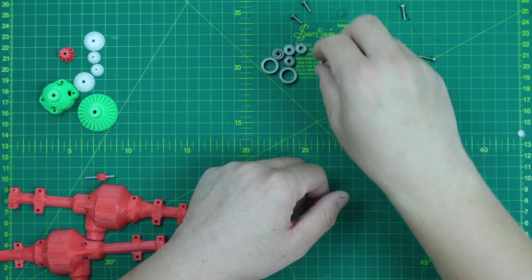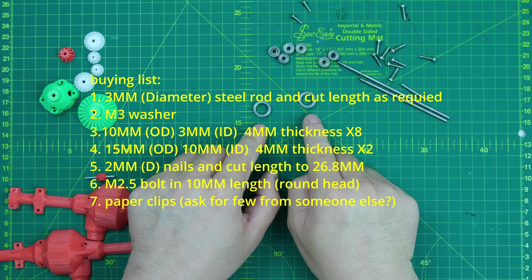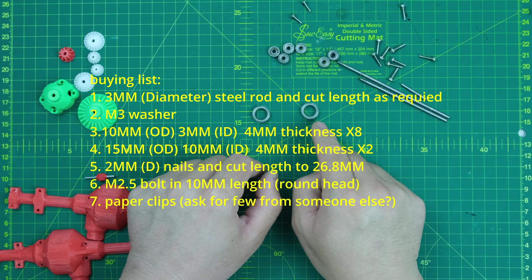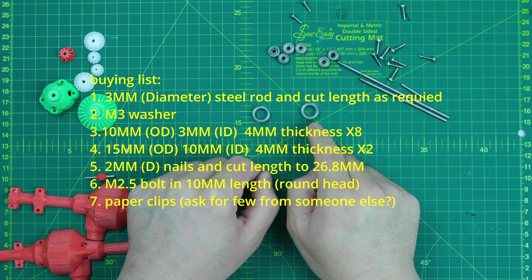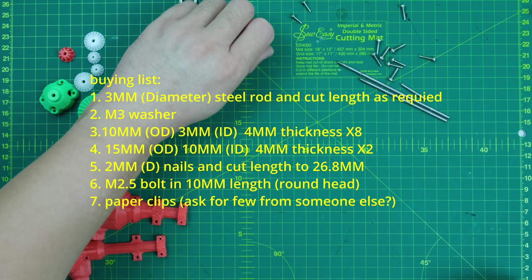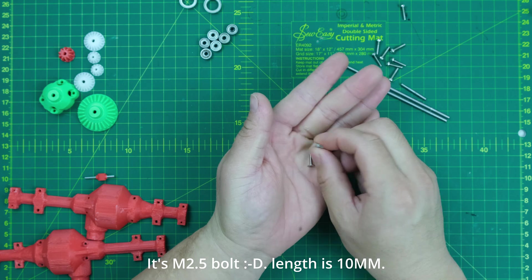You need to buy ball bearings. There are two types of them used in my project. Two big ones, which are 15mm outer diameter and 10mm inner diameter. Another one is smaller, which is 10mm outer diameter and 3mm inner diameter. Both are used to fix everything together.